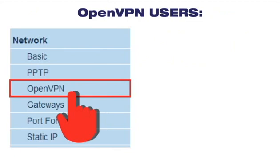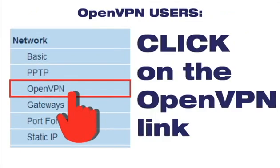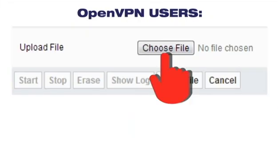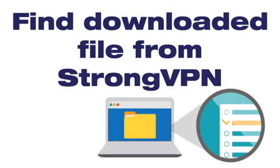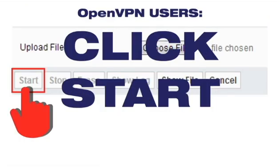In the menu, under Network, click on OpenVPN. Then click Choose File and navigate to where you downloaded the .ovpn file from StrongVPN. Click Start.